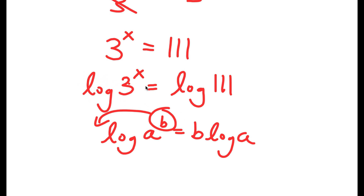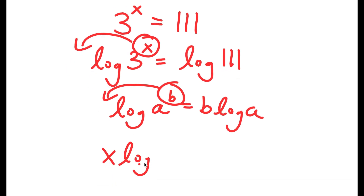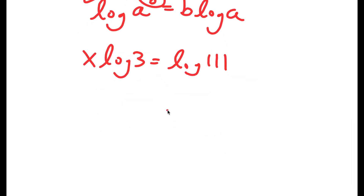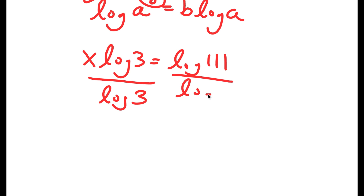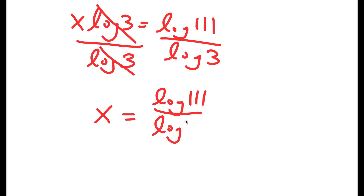In this case, I have log 3 to the power of x and I can move x to the front. So I get x times log 3 is equal to log 111. If I divide both sides by log 3, these two cancel out and I get x is equal to log 111 over log 3.